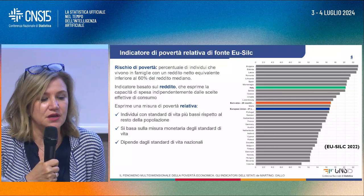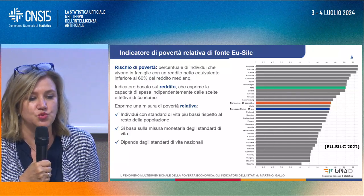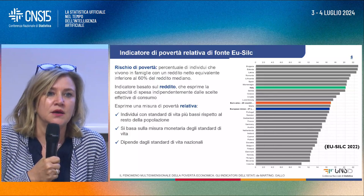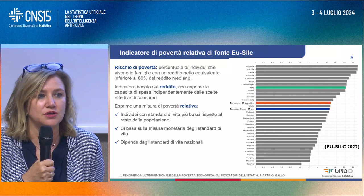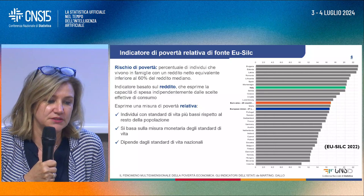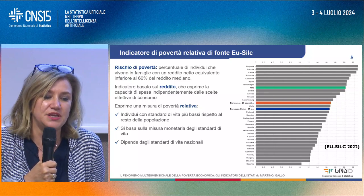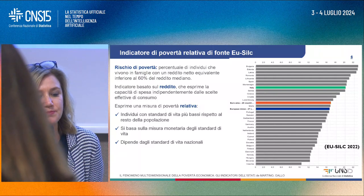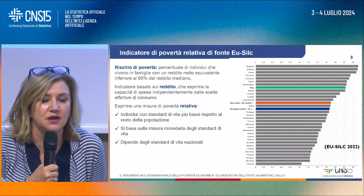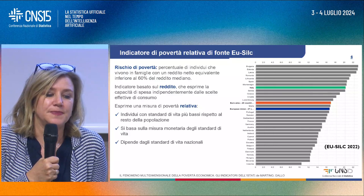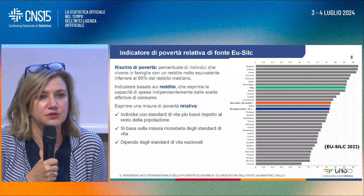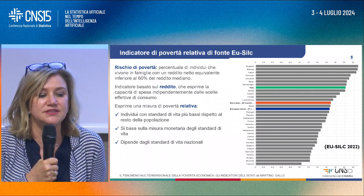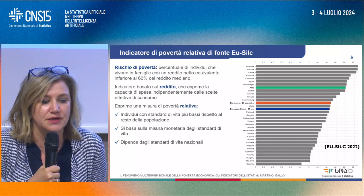L'indicatore calcolato è il rischio di povertà, ossia la percentuale di individui che vivono in famiglie con un reddito netto equivalente inferiore al 60% del reddito mediano. Abbiamo una soglia unica nazionale: è un indicatore basato sul reddito che esprime una misura di povertà relativa, indicando gli individui con standard di vita più bassi rispetto al resto della popolazione. Viene calcolato per tutti i paesi dell'Unione Europea e la condizione dipende dagli standard di vita nazionali, per questo si parla di povertà relativa.